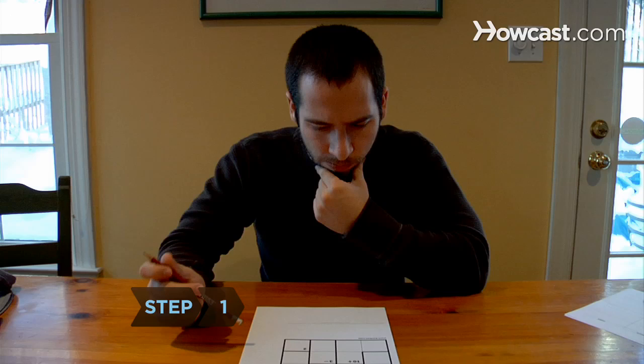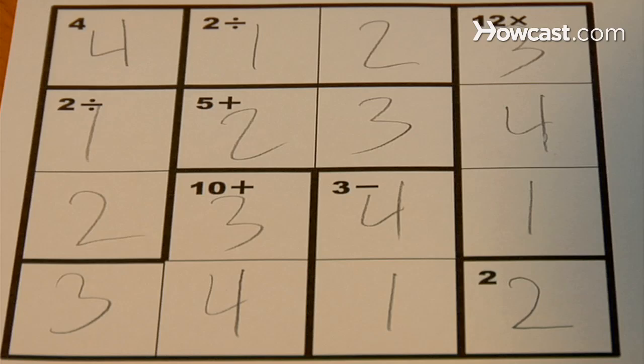Step 1. Examine the KenKen puzzle. The puzzle is composed of a grid of squares with an equal number of columns to rows, and puzzles come in different sizes.